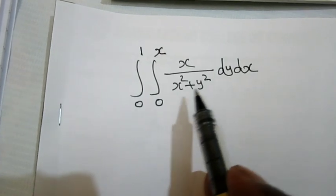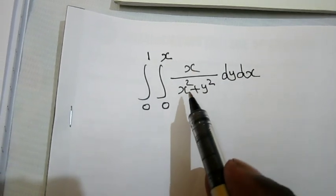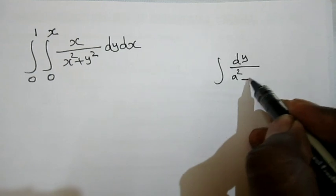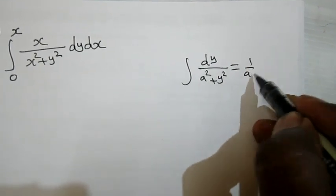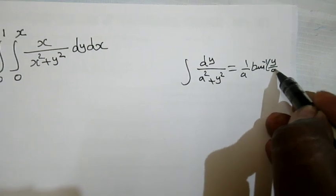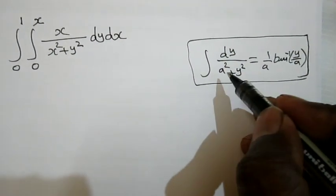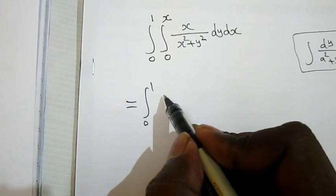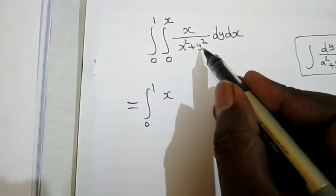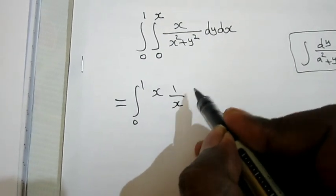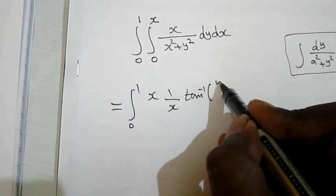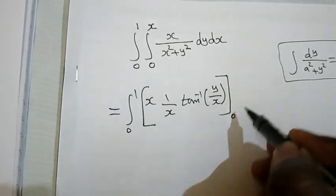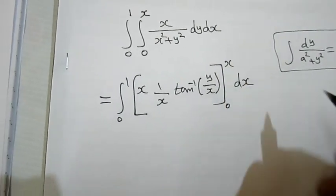The first integral is with respect to y, treating x as a constant. Using the formula: integral of dy divided by (a squared plus y squared) equals (1/a) tan⁻¹(y/a). Here instead of a we have x, so the integral from 0 to 1 of x times (1/x) tan⁻¹(y/x), with the limit for y being 0 to x, into dx.